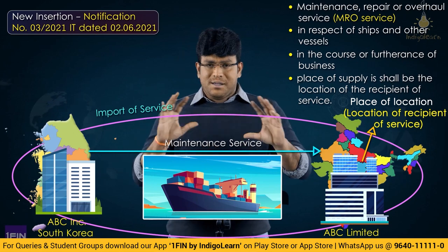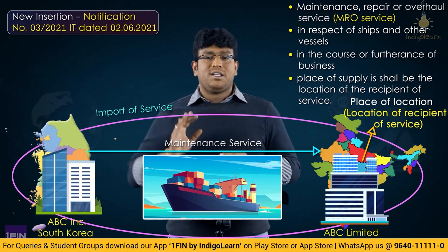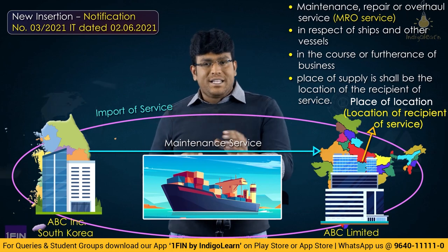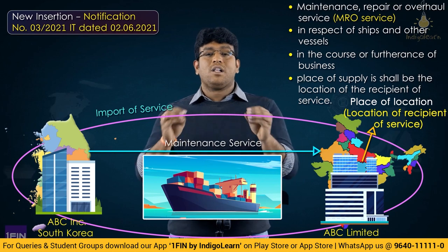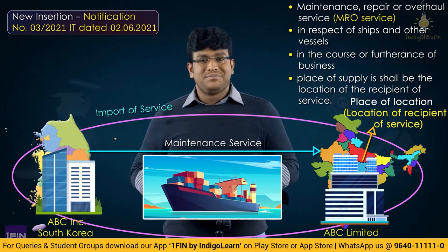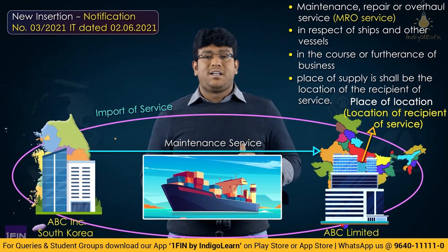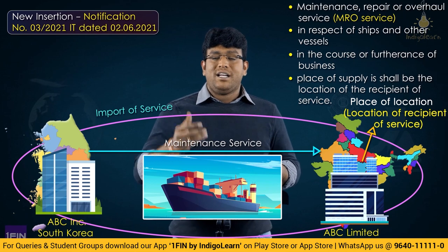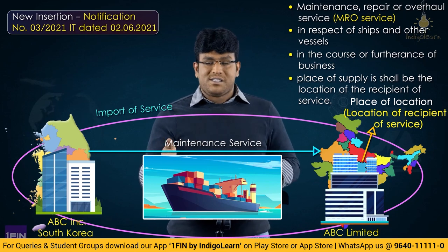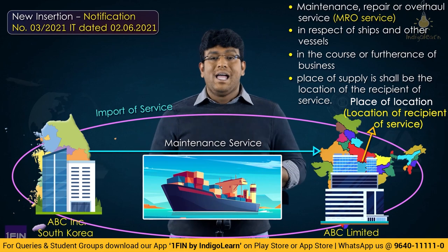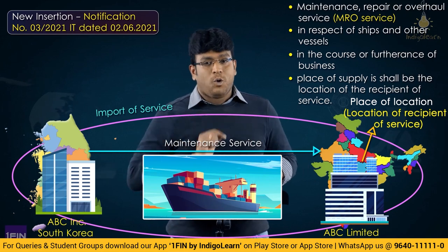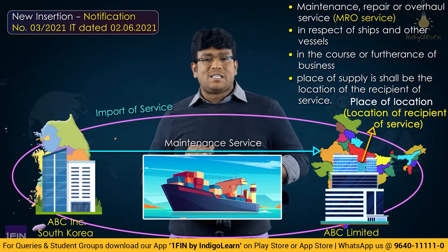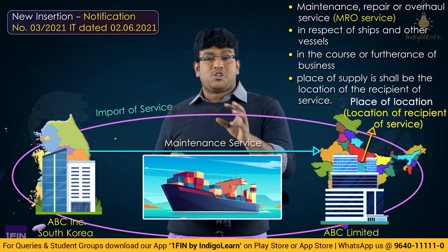In nutshell, as per Section 13(13), one new notified point states that in case of maintenance, repair, or overhaul service related to a ship, taken by a shipping company or shipping entity, place of supply will be the location of recipient. So technically, if an Indian shipping company takes MRO service from abroad, it qualifies as import of service, and this new point has been introduced in Section 13, Sub-section 13.